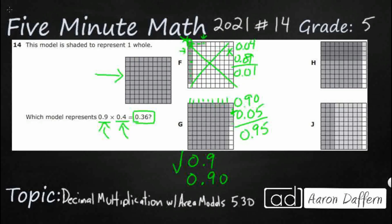H, though, does overlap. Take a look at these light rows: 1, 2, 3, 4 light rows — we'll call that 4 tenths. Take a look at these medium columns: 1, 2, 3, 4, 5, 6, 7, 8, 9 medium columns. They overlap into a dark box in the corner. If you count that — 4 rows of 9 — it's going to make 36 hundredths. J is additive; it just adds 3 tenths plus 6 tenths to make 9 tenths, which is not what we need. The answer is H.